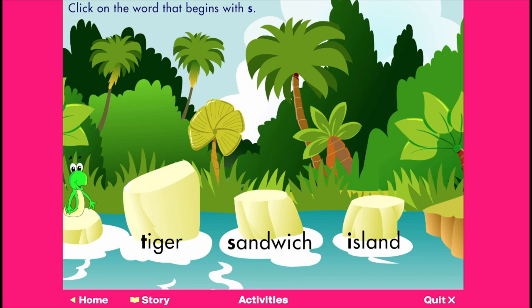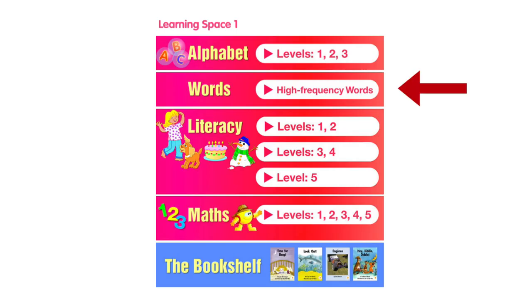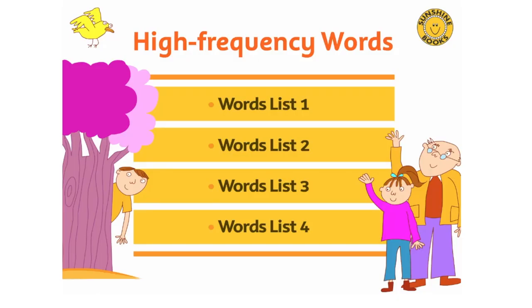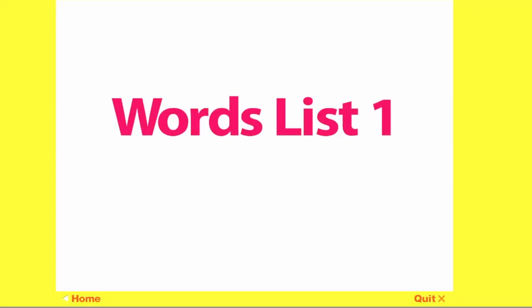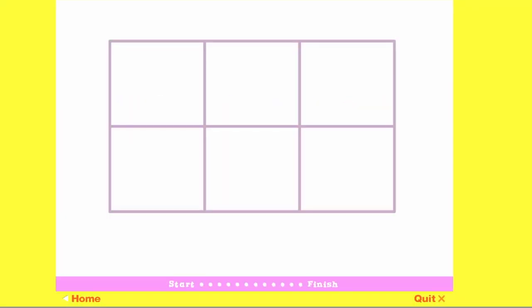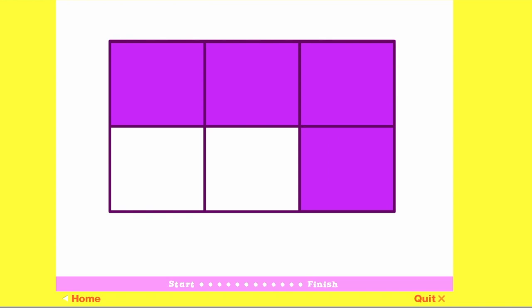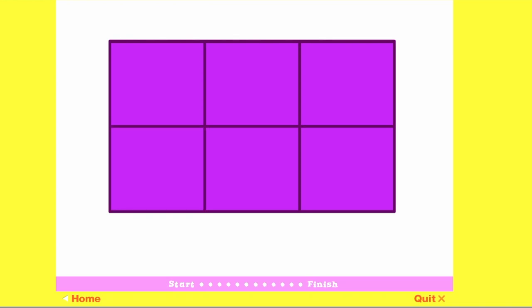The high-frequency words activities look at the first 48 essential words. Students first match the words, then identify them, and read them in the context of a simple sentence.